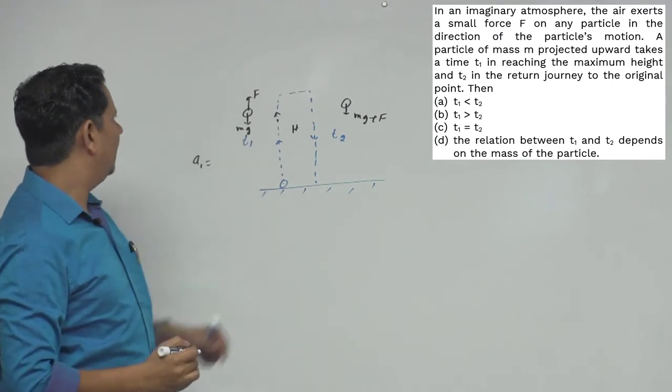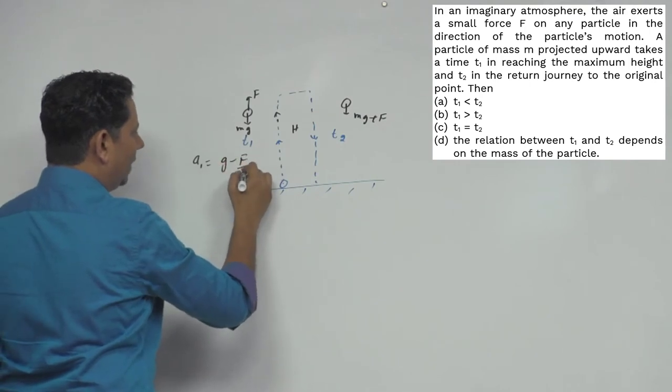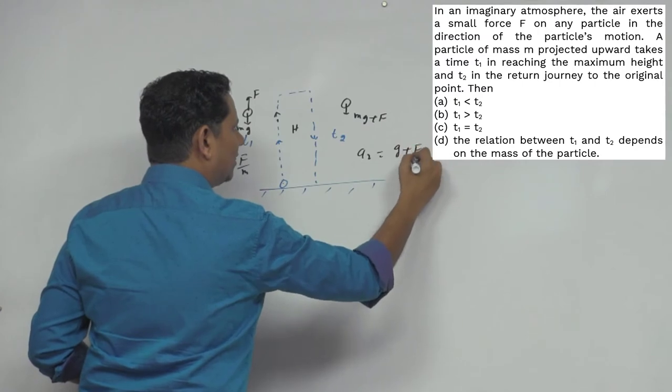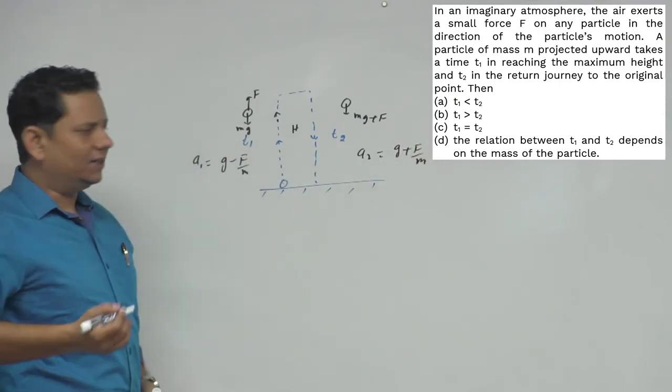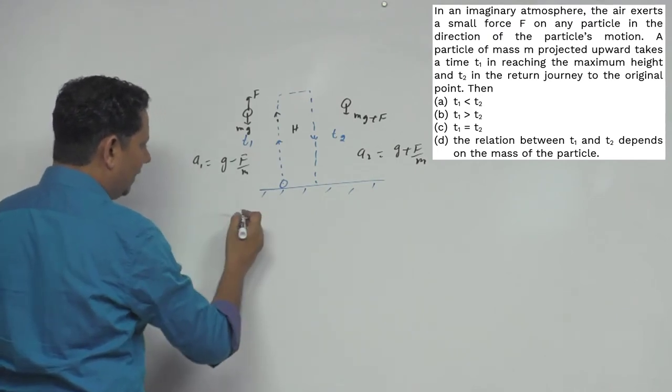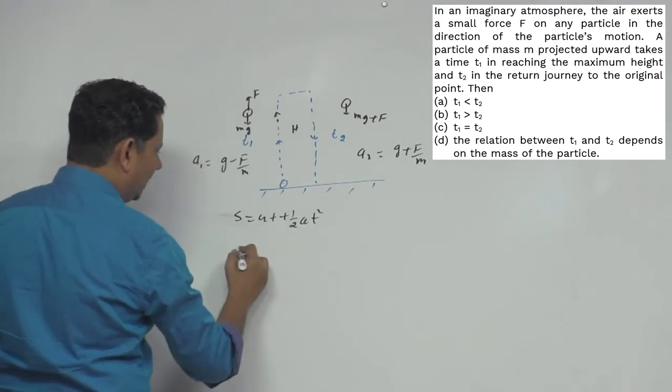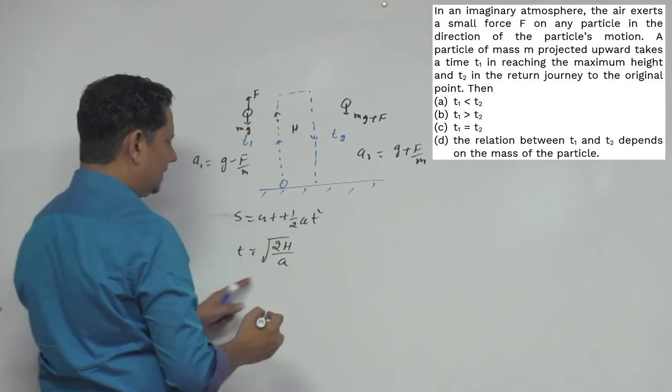mass: a1 = g minus F/m. For downward motion, a2 = g plus F/m, which is retarding acceleration. Using the first equation of motion, T1 will be equal to square root of 2h divided by a1 acceleration.